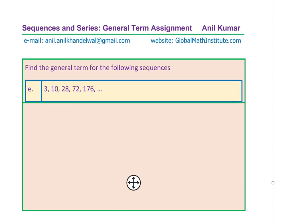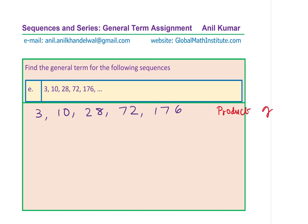Now here is the last one. I would like you to pause the video and answer it yourself. We have to find the general term for the following sequence: 3, 10, 28, 72, 176. Let's rewrite this — we are working on: 3, 10, 28, 72, 176. Apply one of the strategies we have learned. Now, can we write them as a product of two numbers? That is one of our important strategies — product of two numbers, that is, finding factors.